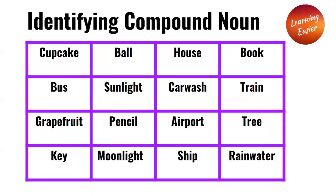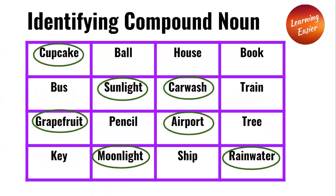Identify the compound nouns below. The compound nouns are: cupcakes, sunlight, car wash, grapefruit, airport, moonlight, and rainwater.